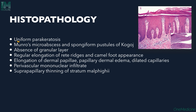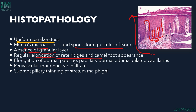Histopathology shows uniform parakeratosis with retention of the nucleus and increased keratinocytes. Munro's microabscesses and spongiform pustules of Kogoj are seen: when inflammatory cells are in the spinous layer they are called pustules of Kogoj; when neutrophils are in the stratum corneum they are called Munro's microabscesses. There is also absence of the granular layer, regular elongation of rete ridges with a camel-foot appearance, elongated dermal papillae with perivascular infiltrates, and suprapapillary thinning of the epidermis.